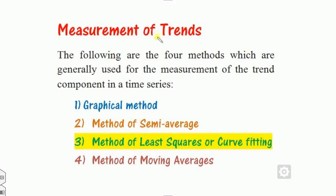So what is the need of the measurement of the trend, and why we need them, and what are the various methods which you can use to measure these values? There are four different methods to measure the value of the trends: graphical, semi-average, method of least squares, and moving average. In this presentation I just cover the method of the least squares and after that I cover the rest of them.